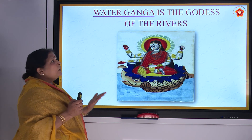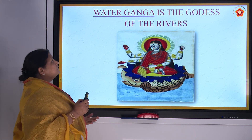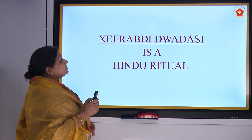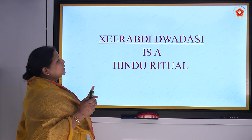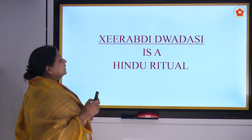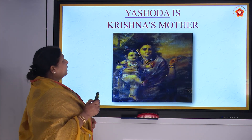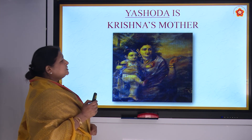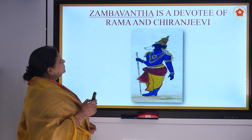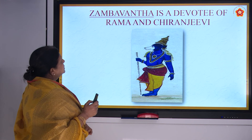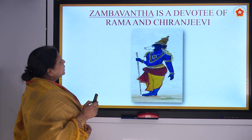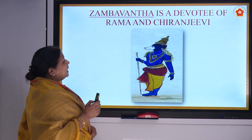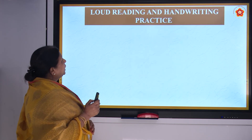X — Kshirabdi Dwaradasi is a Hindu ritual. Y — Yashoda is Krishna's mother. Z — Jambuvanta is a devotee of Rama and a Chiranjeevi.